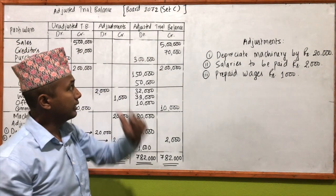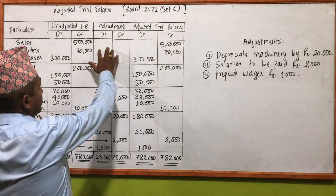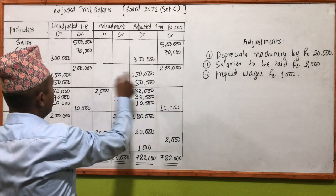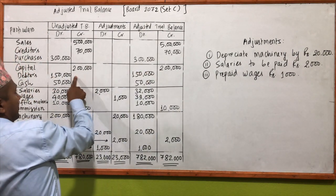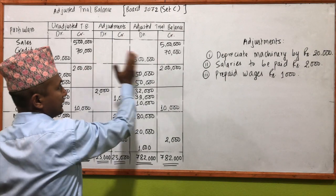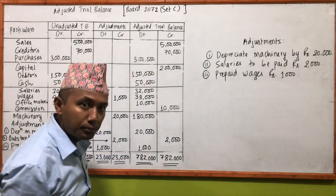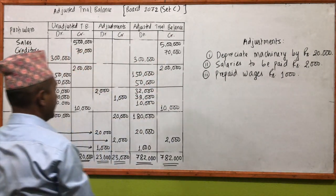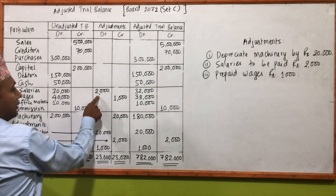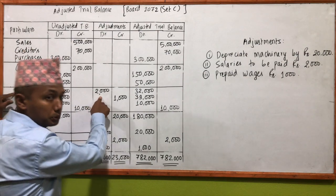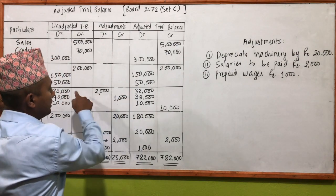Now let's get to the adjusted trial balance. There are 9 points. You can say there are about 9 adjustment points. The key ones are debit and credit entries. Salaries are added to debit. The salary debit is around 32. Wages debit and credit — debit is due to credit, which is about 40.